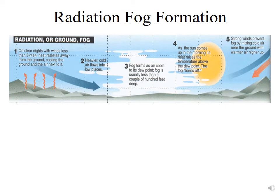Now we'll talk about the different fog formation mechanisms. In broad terms, the only ways to create fog at the ground are to add water vapor to the atmosphere to make it saturated, to cool the atmosphere until it becomes saturated, or to mix two initially subsaturated air parcels together that, due to the nonlinear mixing rule, become saturated. There are several different mechanisms by which we can do this.